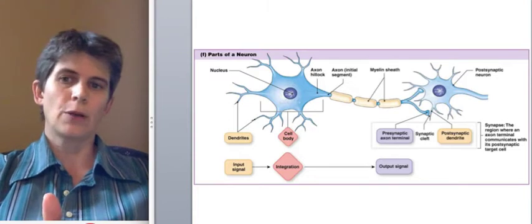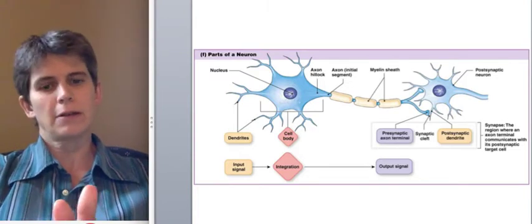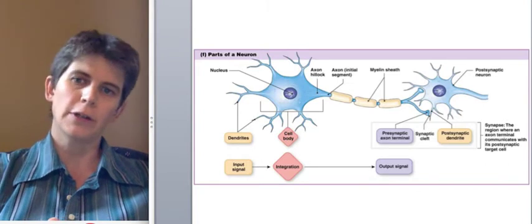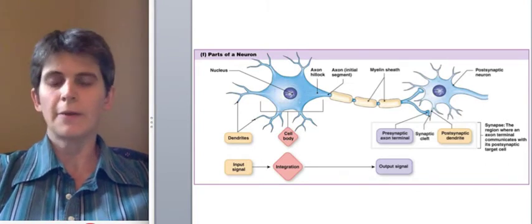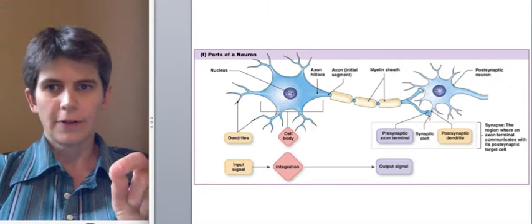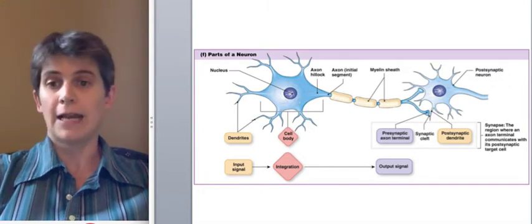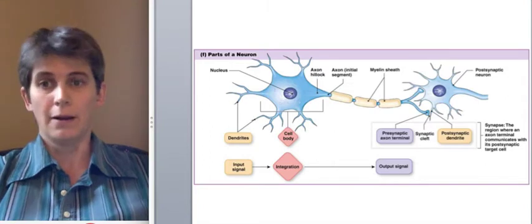If you want to know about the quantitative basis of understanding the action potential using the Nernst and Goldman equations, please watch my other video about that. Also, there's another video that shows how action potentials are transmitted down the axon that follows on this one.